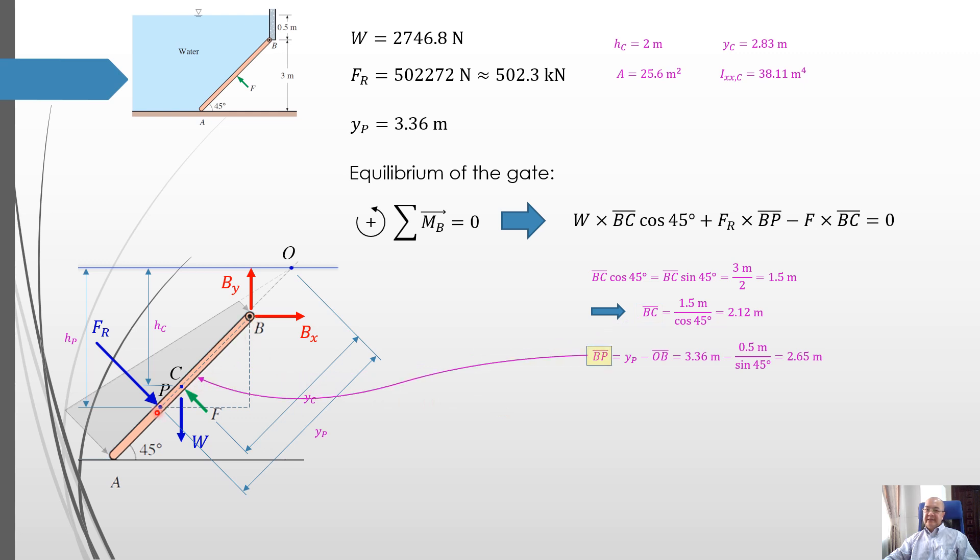For BP, we see this triangle from B to P. We have calculated YP, YP is from O to P, but what we need is B to P. It means B to P is YP minus OB. For OB, we see this triangle. We have this vertical distance equal to 0.5 and the angle is 45 here. So OB will be 0.5 over sine 45, that is 0.707 meters. So we have BC cos 45, we have BP, we have BC. We have W, we have FR.